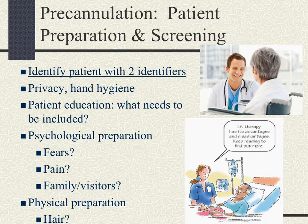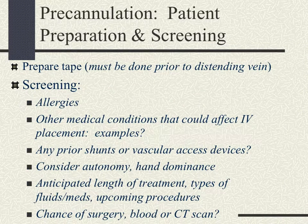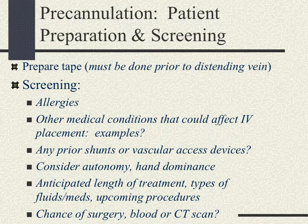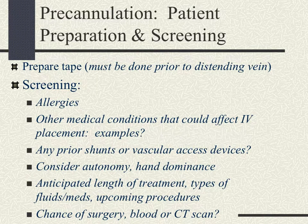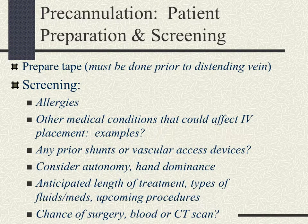Another important step is preparing your tape prior to distending the vein, so that you have everything ready when you are about to cannulate. We also want to screen ahead of time for allergies and medical conditions that could affect IV placement — such as a history of breast cancer, renal failure, cellulitis, burns, or edema — and we don't want to start an IV distal to those areas. Avoid extremities with paralysis or poor circulation.